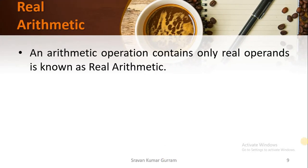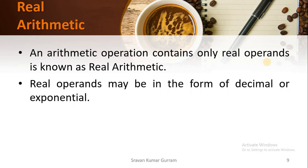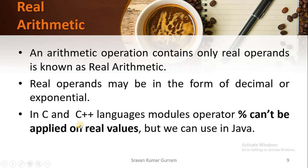If any arithmetic operation contains only real operands, that operation is called a real arithmetic operation or simply real arithmetic. The real operands may be in the form of decimal or exponential. This is a very important point: in C and C++ languages, the modulus operator cannot be applied to real values. But we can use this in Java.